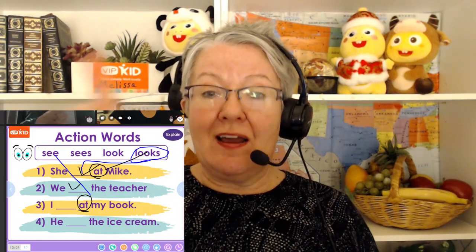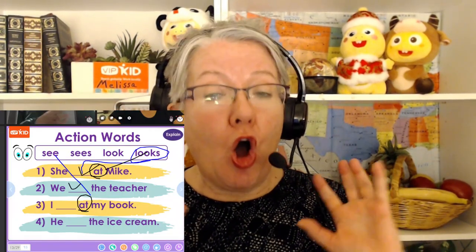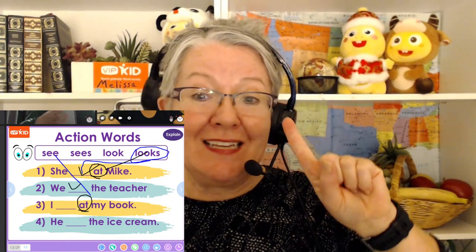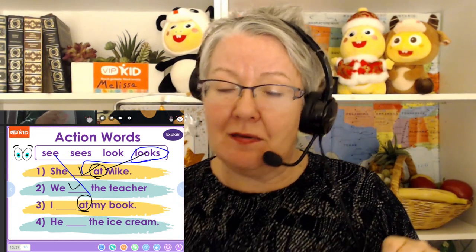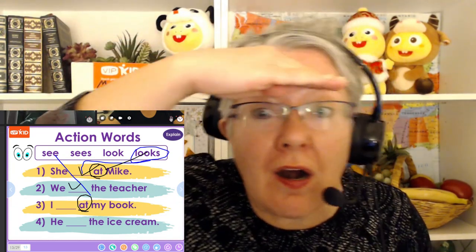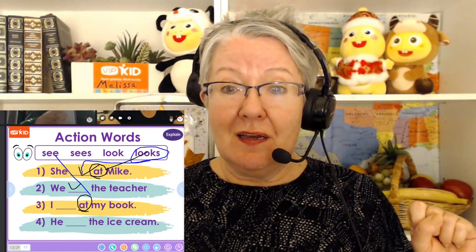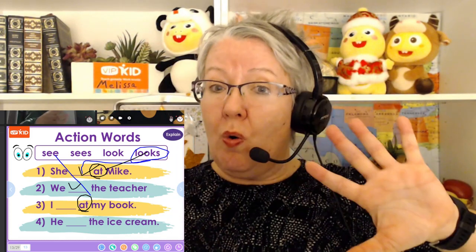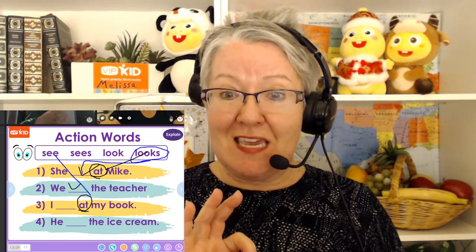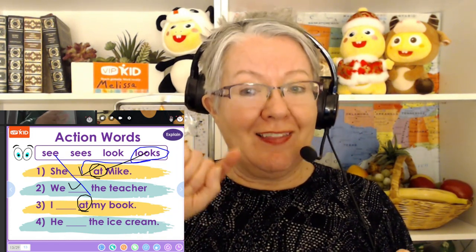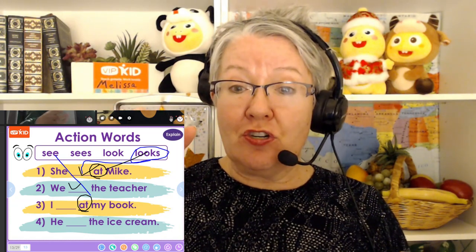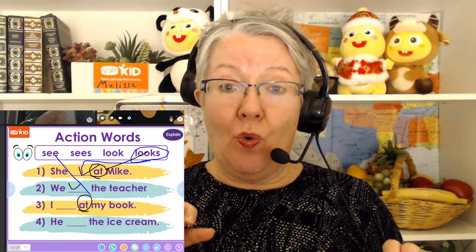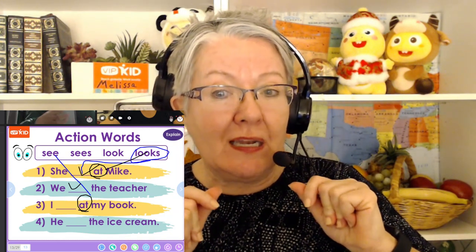Here's what I focus on. As you can see in this slide, I have circled the word 'at.' Look always needs another word — it needs 'at' or 'for.' I can see Mike, but I must look at Mike, or I must look for Mike. But if Mike is right there, there's no other word — it's 'see.' I point out on this slide that 'look' needs 'at,' and I did it on the first one and then circled it again on the one below, and the student immediately got it.